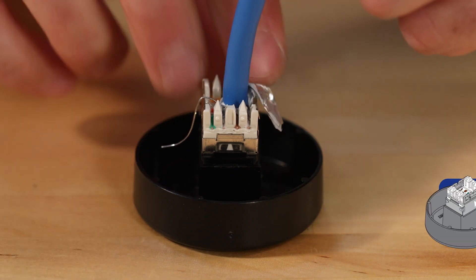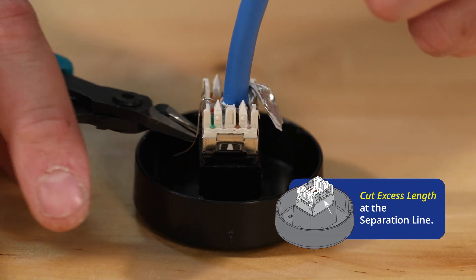Use the CWST to cut excess length at the separation line found on the jack housing.